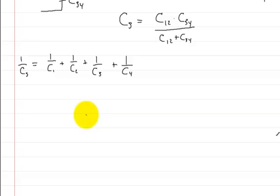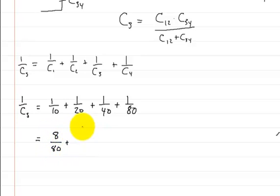We'd say 1 over the capacitance in series is equal to 1 over 10, plus 1 over 20, plus 1 over 40, plus 1 over 80. And then you just have to find the common denominator. And so that would be equal to 8 over 80. And this one, this one would be 4 over 80. The next one would be 2 over 80, plus 1 over 80.